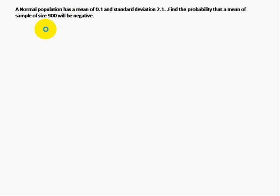So the given data is what we look at first. The mean μ is 0.1, the standard deviation σ is 2.1, and the sample size n equals 900.